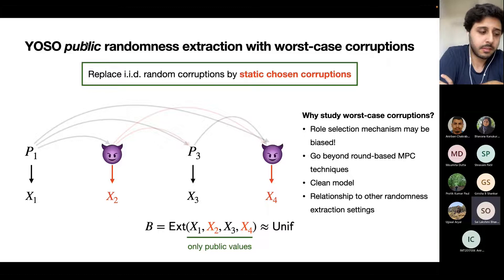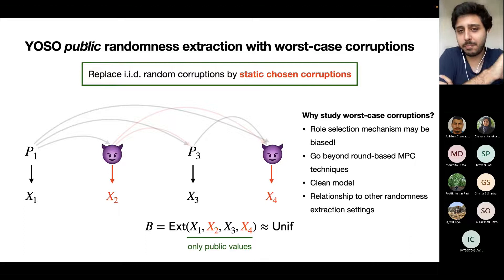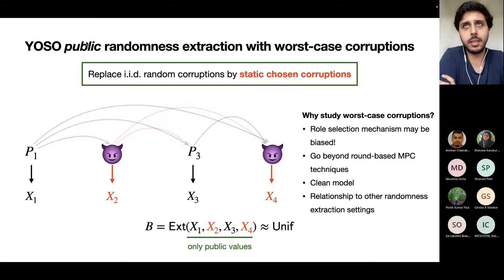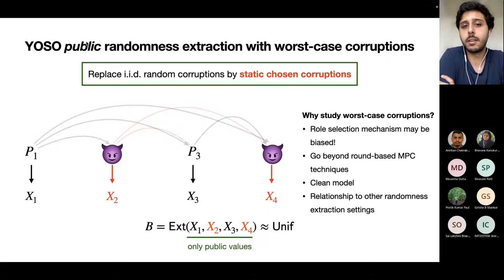What is worst-case corruption — do you mean static corruption? Yes, sorry, I mean static. When I say worst-case, I mean static chosen corruption: before the protocol starts, the adversary commits to corrupting a subset of parties. Our protocols never really considered adaptive corruptions, but it would be nice to get protocols that work for adaptive corruptions as well — that's an open problem.